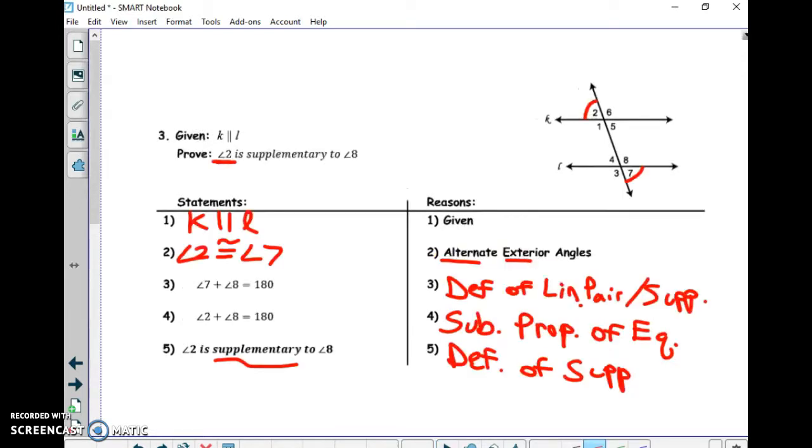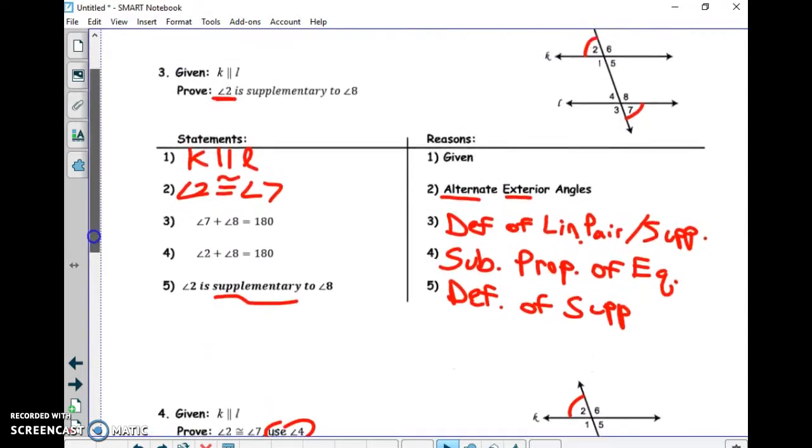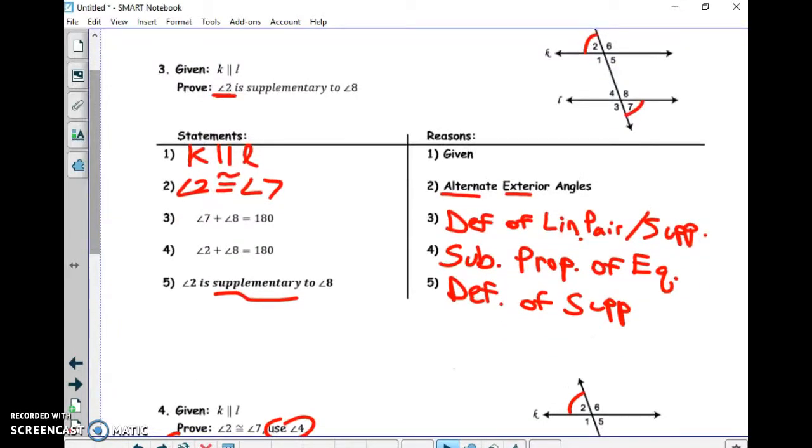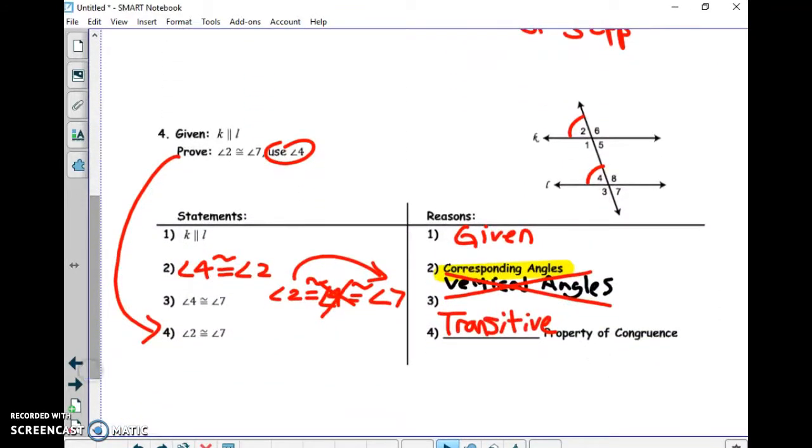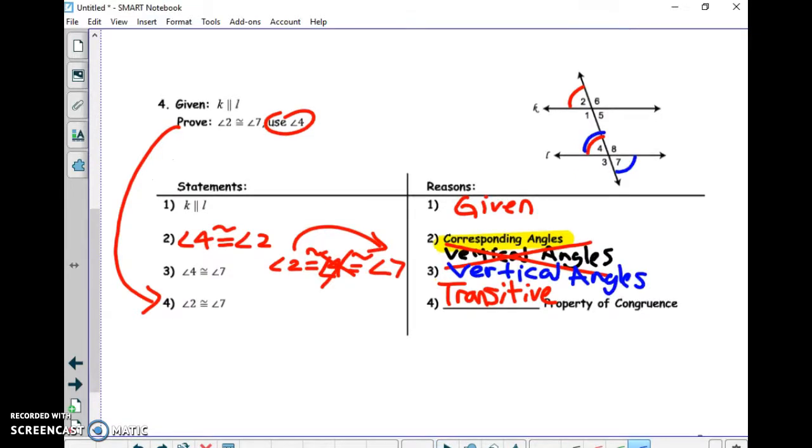On number three, it was just like number one from the other page. You had to tell me what was given, tell me which were alternate exterior angles using what you're trying to prove. And then on number four, that one's similar to number two from the front side. You're kind of doing that skip over method, that's called the transitive property of congruence. Don't forget step three is vertical angles.